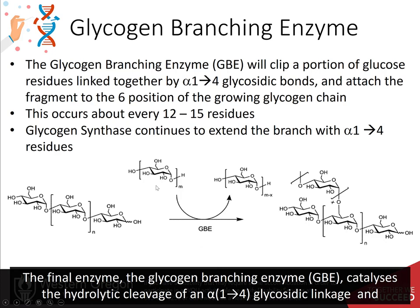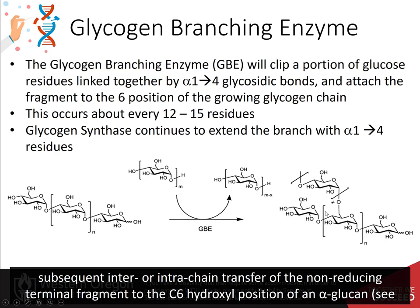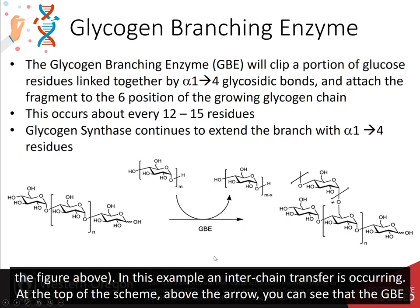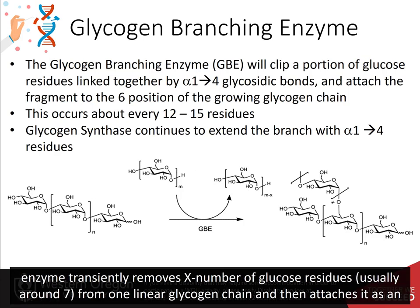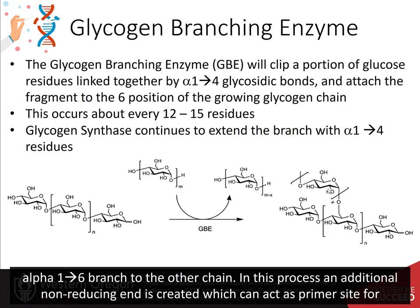The final enzyme, the glycogen branching enzyme, catalyzes the hydrolytic cleavage of an alpha-1,4 glycosidic linkage and the subsequent inter- or intra-chain transfer of the non-reducing terminal fragment to the C6 hydroxyl position of the alpha-glucan. In this example, an inter-chain transfer is occurring. At the top of the scheme above the arrow, you can see that the glycogen branching enzyme transiently removes approximately 7 glucose residues from one linear glycogen chain, and then attaches it as an alpha-1,6 branch to the other chain.